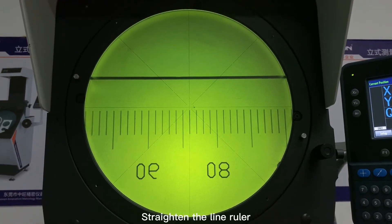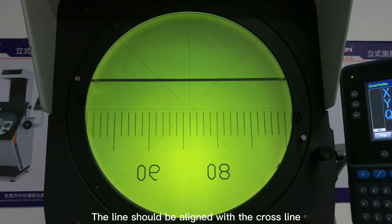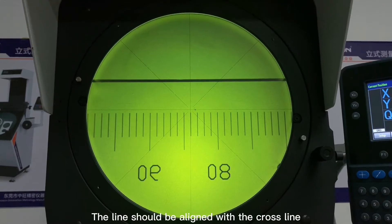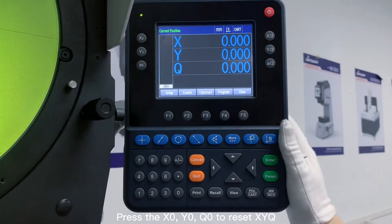Straighten the line ruler. Justify line. Find a line at the far left, the line should be aligned with the cross line. Press the X0, Y0, A0 to reset Zike.